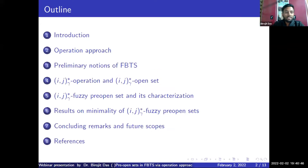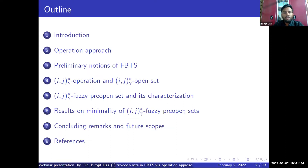This is the outline of today's presentation. First, I will discuss the introduction, starting with the operation approach method. In our study, we apply the operation approach to fuzzy bi-topological spaces. I will discuss preliminary notions, then the main contributory research works: the IGstar gamma operation, IGstar gamma open set, IGstar fuzzy pre-open set, and characterizations of those sets. Results via minimality will be discussed here; results on locally finiteness appear in the full paper. Finally, I will make concluding remarks and discuss future scope.